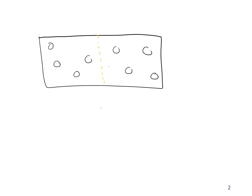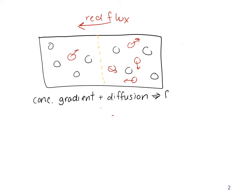Let's draw a picture of this. If we have a box with two sides and molecules on each side, let's focus on the red molecules. We have more on the right side than the left. All these molecules have random motion. Over time, we get a flux of red molecules from right to left because there's more on the right-hand side. So we have a concentration gradient, or spatial difference in concentration, and that combined with diffusion leads to flux.